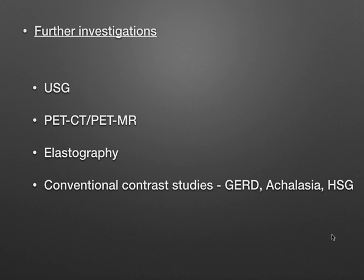Always suggest further investigations — USG, PET-CT, elastography. Also consider conventional contrast studies: a patient with epigastric pain and normal pancreas on CT could be a GERD case or achalasia cardia. For uterine anomaly or infertility cases, go for HSG. These additional investigations play an important role in reaching a final diagnosis.